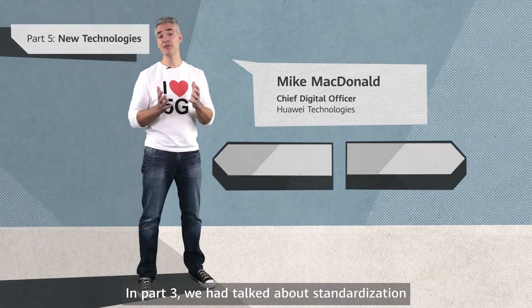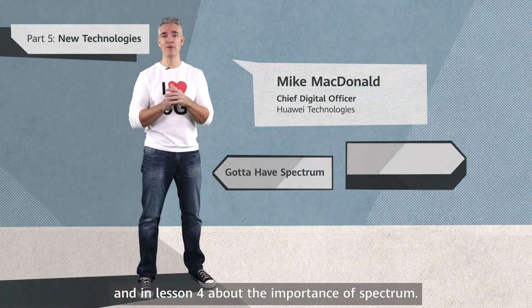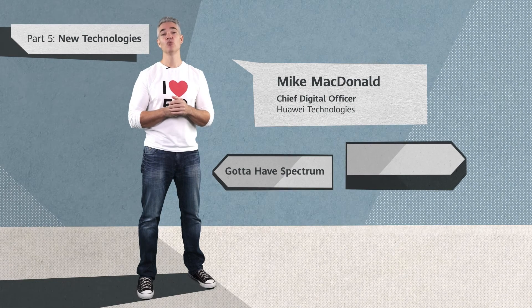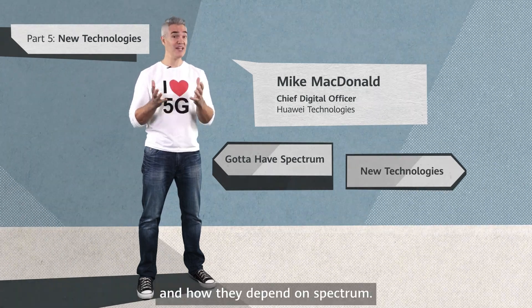In part 3, we talked about standardization, and in lesson 4 about the importance of spectrum. In this chapter, we will discuss some of the new 5G technologies and how they depend on the spectrum.